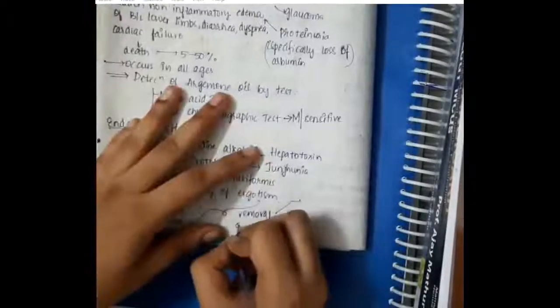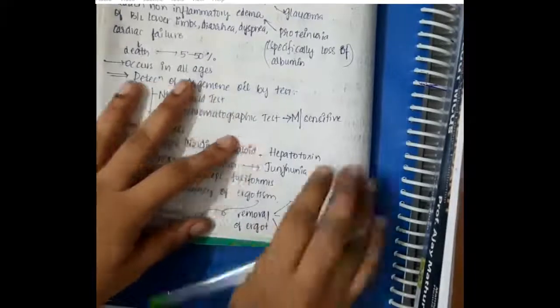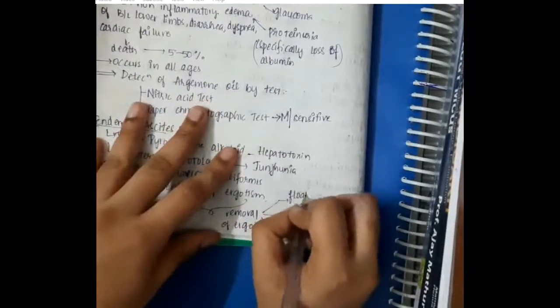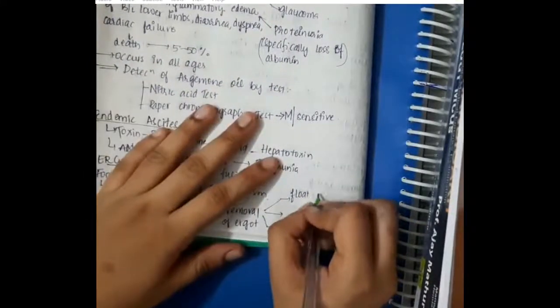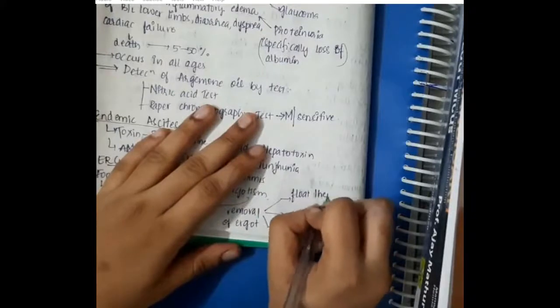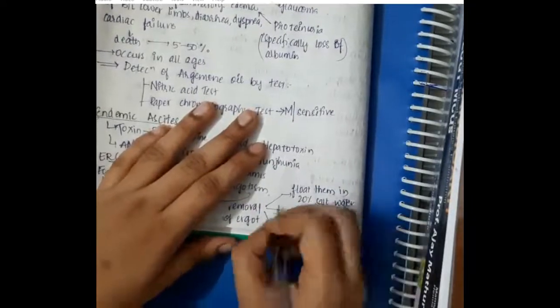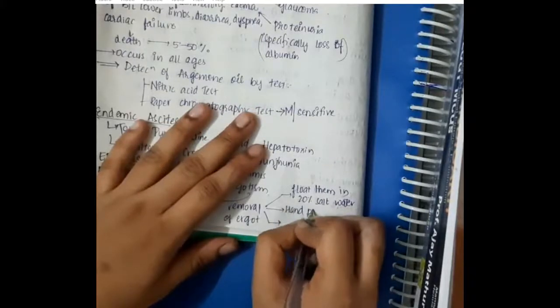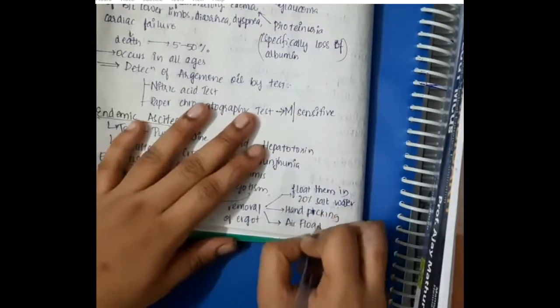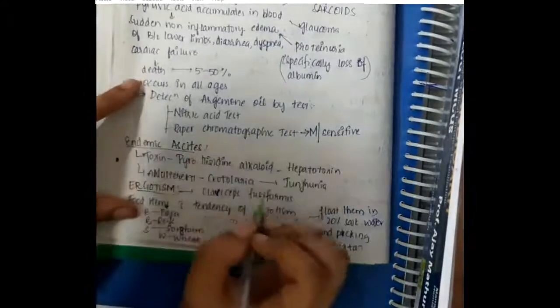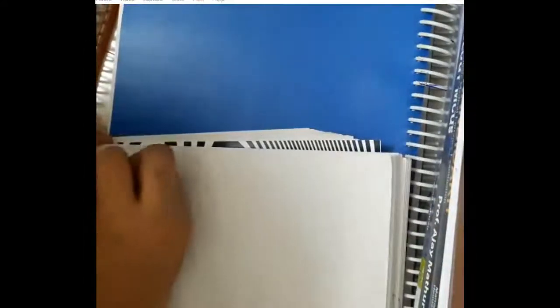You will have to remove the ergot. We can remove the ergot by floating them in 20% of salt water. You will have to take these grains and put them in 20% of salt water. If they float, then they are good. You can do hand picking of the ergot if you can differentiate them or we can do air flotation technique.